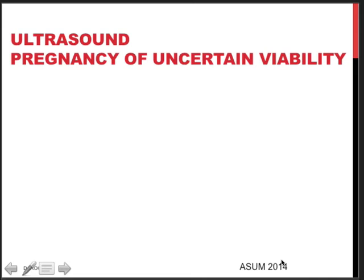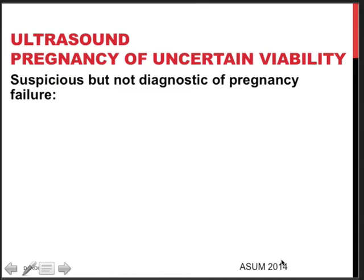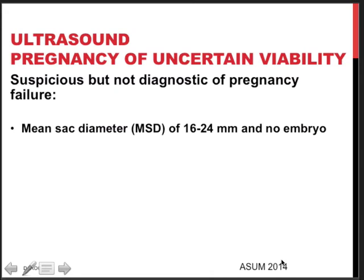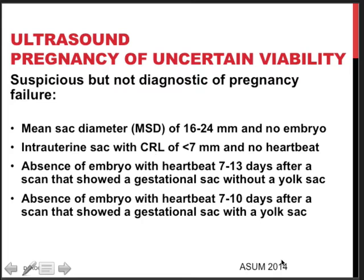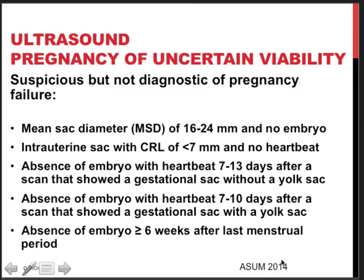There are criteria pointing at uncertain viability — more relevant for junior doctors working in a women's assessment unit dealing with early pregnancy. If the sac diameter is 16 to 24 millimeters with no embryo visible, or a sac with a crown-rump length of less than 7 millimeters and no heartbeat, it is advisable to repeat the ultrasound scan one week later — because in a normal pregnancy, one week makes a big difference in embryonic development. Here it is appropriate to sit on the fence and repeat the scan in 7 to 10 days.